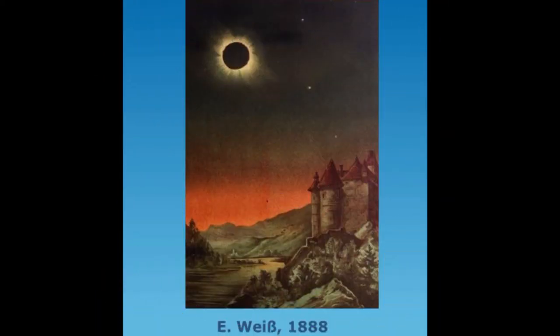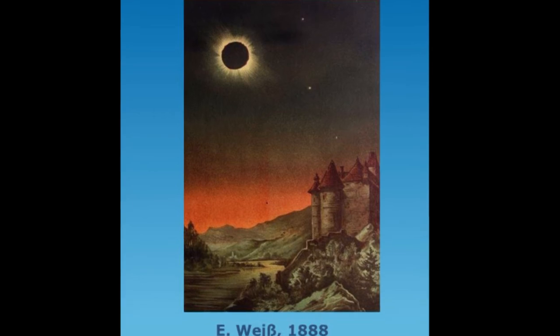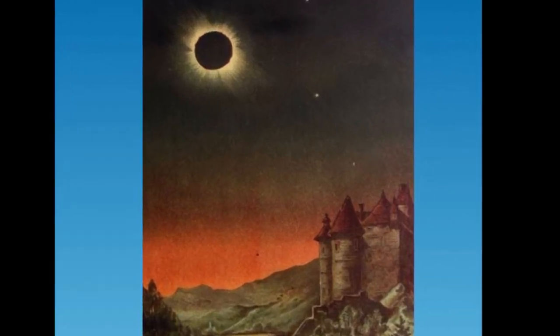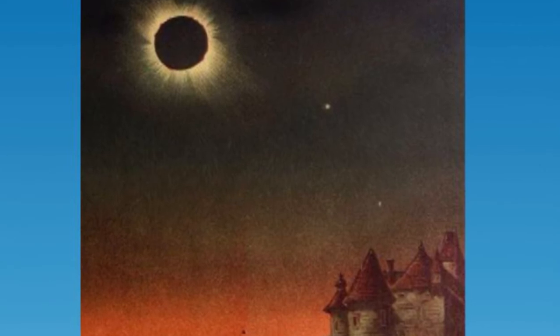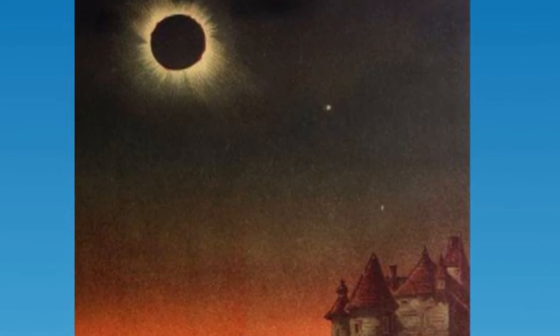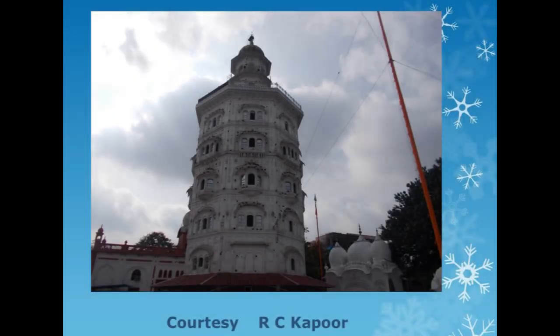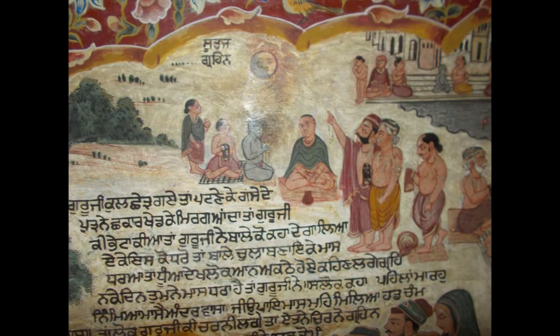Eclipses have always been of great interest to artists, which continues even now. Before the advent of photography, such paintings were very helpful in understanding the solar corona. This is the Baba Atalji Gurudwara of Amritsar. The mural depicting an eclipse was pointed out by Professor Ramesh Kapoor. It is an episode from the life of Saint Guru Nanak, who visited Kurukshetra. Professor Kapoor has dated the eclipse to 1507.